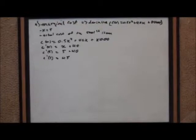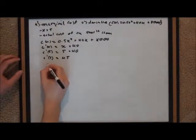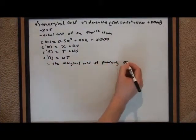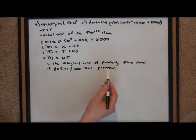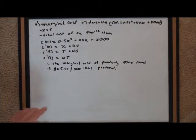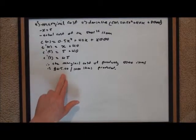For Part A, you're determining the marginal cost, which is just the derivative of the cost function. We use x equals 5 because x is represented in thousands. Therefore, the marginal cost of producing 5,000 items is $45 for every thousand items produced. The reason it's a rate is because marginal cost is the rate of change — so the rate of change after 5,000 items is $45 per thousand items.